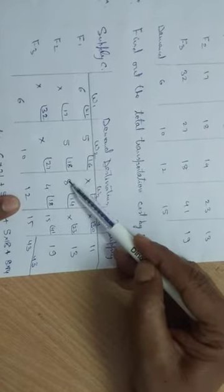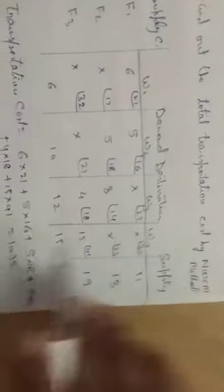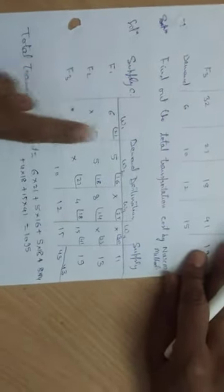Now come to the second column. Total demand is 13, but 5 is already allocated, so 13 minus 5 is 8. We have 12 available, so allocate 8. Now move to the next: 19 demand minus 4 already used is 15 remaining. Allocate 15 to complete. Now verify: 43 on supply side equals 43 on demand side. Now calculate the total transportation cost: 6 times 21 plus 5 times 16 plus 5 times 18 plus 8 times 14 plus 4 times 18 plus 15 times 41. Our total transportation cost is 1095.